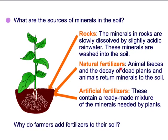There are also natural fertilisers, such as animal faeces and the decay of dead plants and animals, that return those minerals to the soil. And then there are artificial fertilisers that you can buy — which we have looked at making in previous topics — and these are a ready-made mixture that can be added to the plants.